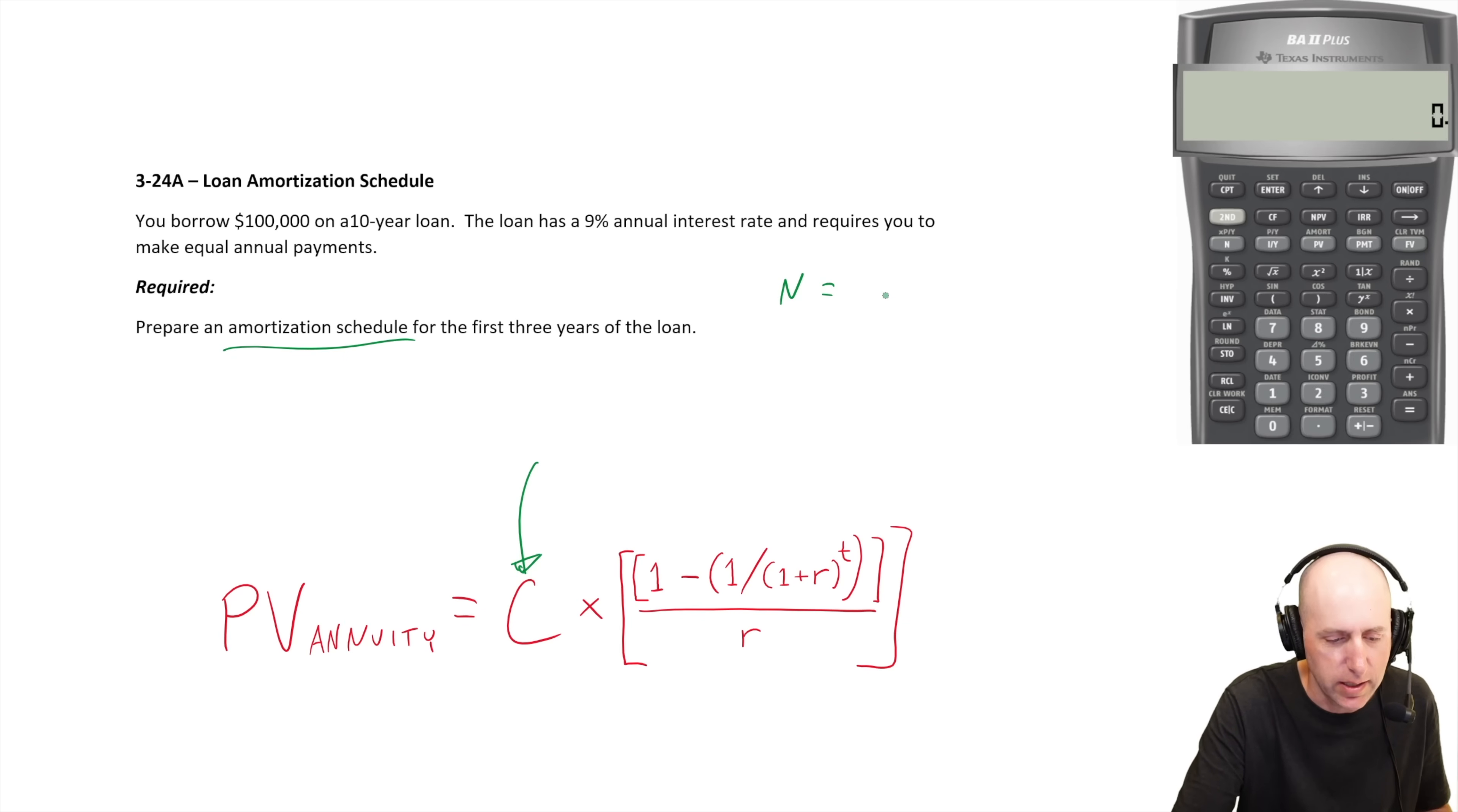What am I going to input into my calculator? Let's start with the N number of periods is 10, there's 10 years, it's annual interest. So 10 periods, 10 payments. What's next? I/Y the discount rate, the discount rate here is 9%. PV, what is the value today? We're borrowing, we're getting a hundred thousand. Let's put in a positive hundred thousand as the PV. The next one is PMT. That's what we're solving for. And the last one is FV and that's going to be zero because we're paying off this loan over the 10 year period.